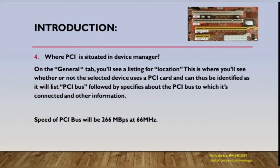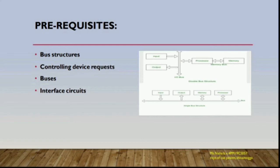Regarding where PCI is situated: in Device Manager on the General tab, you will see a listing for Location. This shows whether the selected device uses a PCI card. It will list 'PCI bus' followed by specifics about the bus to which it is connected. The speed of the PCI bus is 266 Mbps.